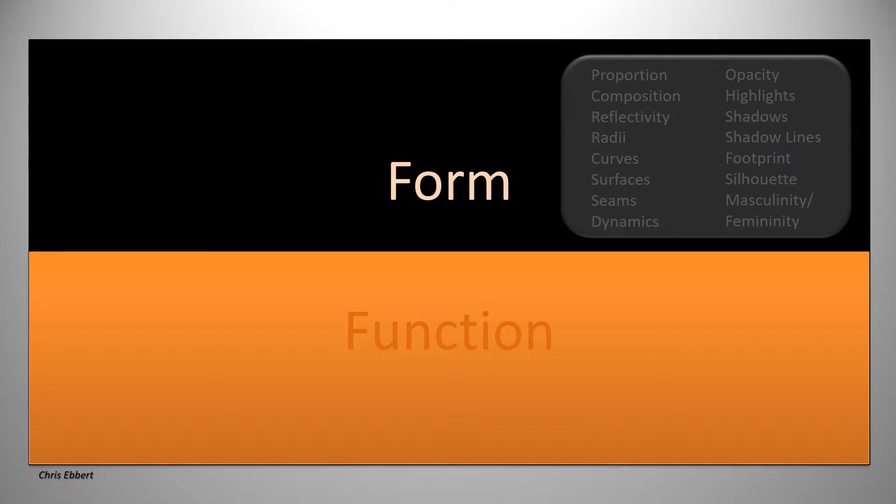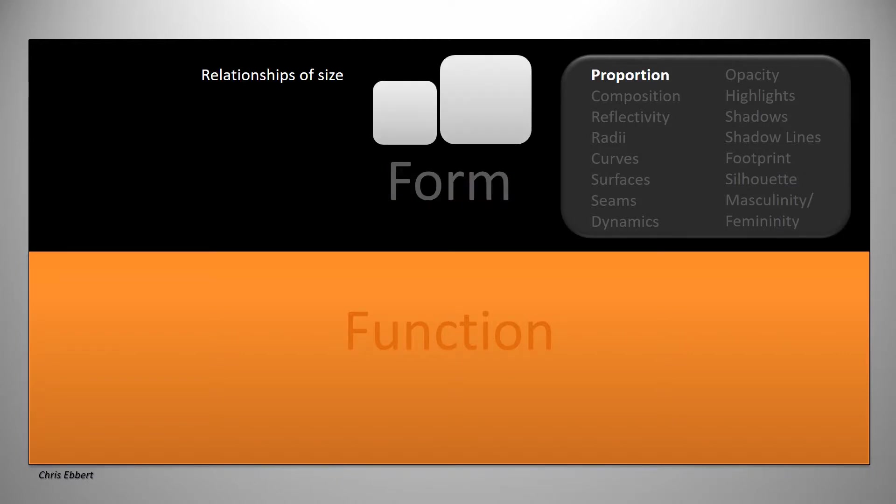And then you have form. Now form, as I said, consists of all these different things. And I'll run you through what they are. Proportion. What is proportion? Proportion is the relationship of size of the different components that make up the object. And you must make this choice very consciously. There are proportioning systems that let you choose the size of things in a way that is actually pleasing. This is a whole new science. Or just a new science. It's an old science. The Romans and the Greeks were the ones who came up with the golden section, for example.